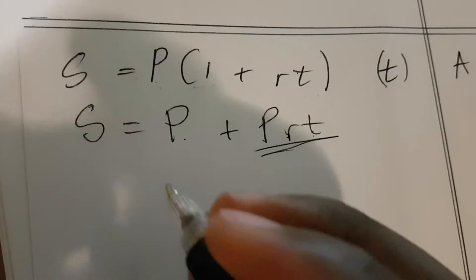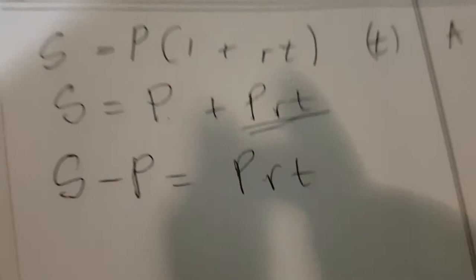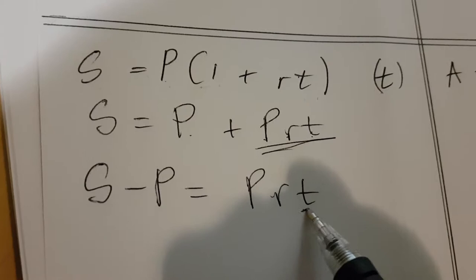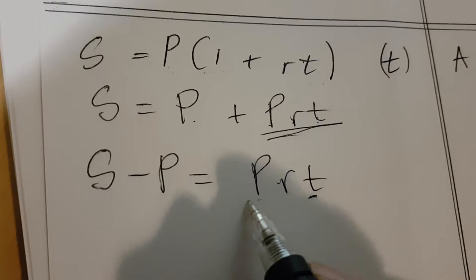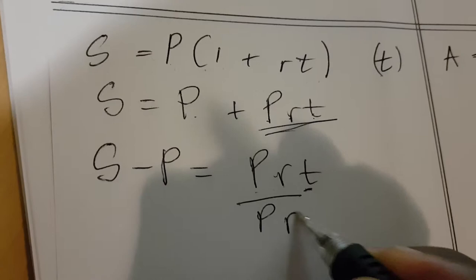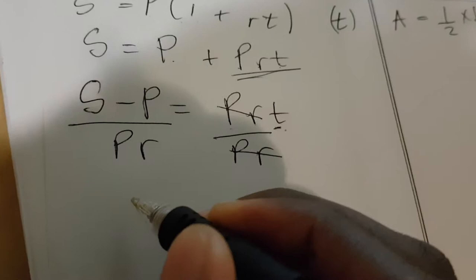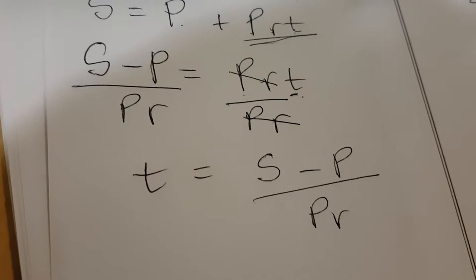Now remove the p term. Bringing it across the equal sign makes it negative, so s − p = prt. We are looking for t, and p and r are attached to t, so we divide both sides by pr. The pr on the right cancels, giving t = (s − p) / pr.